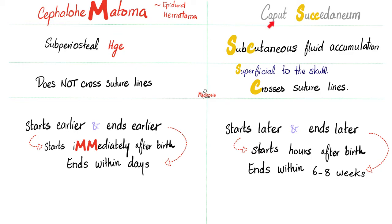Let's take it to the clinic: cephalohematoma versus caput succedaneum. Cephalohematoma is hemorrhage or bleeding beneath the periosteum of the skull. But caput succedaneum is beneath the skin, superficial to the skull bones. Because caput succedaneum is superficial to the skull bones, it will cross suture lines. However, cephalohematoma will not.